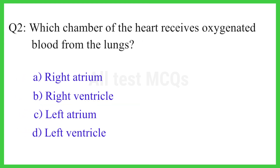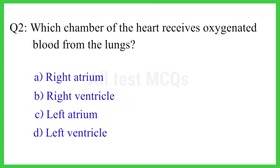Q2. Which chamber of the heart receives oxygenated blood from the lungs? The right answer is option C. Left Atrium.